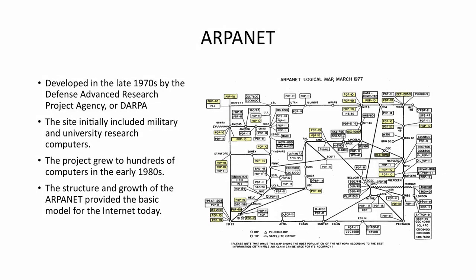The next area of growth for networking was ARPANET. ARPANET was developed in the late 1970s by the Defense Advanced Research Projects Agency, or DARPA, and it was initially a collaboration between military and university research computers. The figure on the right-hand side is a logical map of ARPANET from March 1977. The project grew to hundreds of computers in the early 1980s, and the structure of ARPANET really provided the basic model for the internet today.